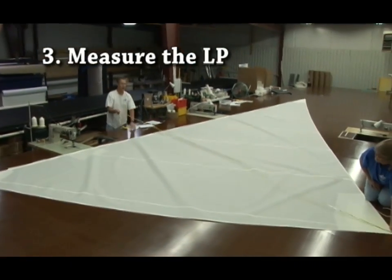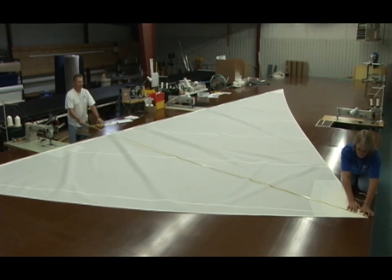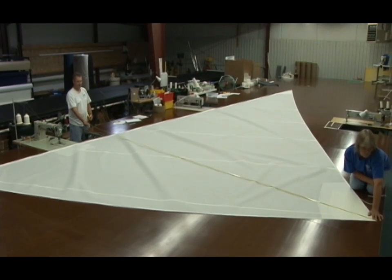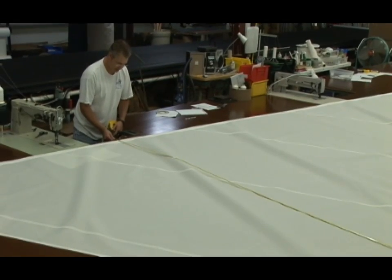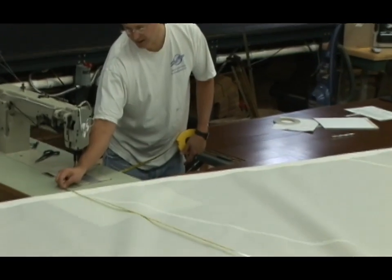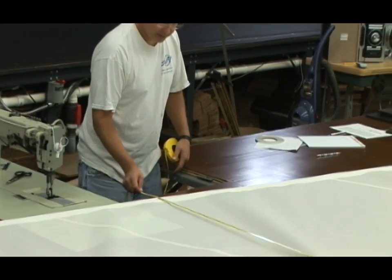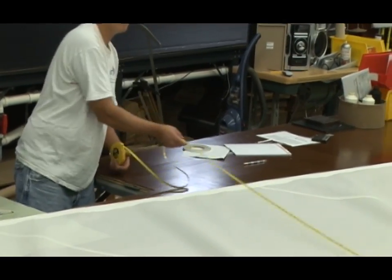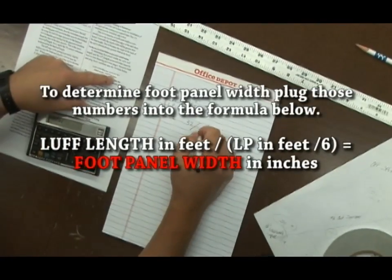We'll also need to measure for the LP, the luff perpendicular. You can eyeball it, but the perpendicular measurement from the clew to the luff edge will be the shortest distance, basically 13 feet 9 inches. You can do that by swinging the tape - I'm at 13-11, for example, then 13-9, 13-9, 13-9.5, 13-10, and it just goes up from there. Once we have those four measurements, we'll go to our pad of paper and do some calculations.